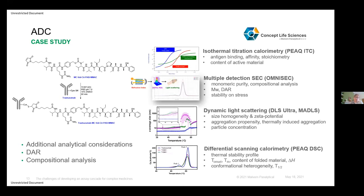Because we have modified the antibody and conducted a bioconjugation process, we also have additional analytical considerations. We need to understand the drug antibody ratio — the DAR — and for that we use a technique such as gel permeation size exclusion chromatography like with the Omnisec, to understand the compositional analysis of our complex medicine. We need to understand how many payloads have been successfully added to the antibody — there are eight cysteines available for conjugation — as well as the population heterogeneity, monomeric purity, and molecular weight. As we move through the program, we may also start thinking about developability properties using dynamic light scattering and differential scanning calorimetry to measure aggregation propensity and thermal stability profiles.